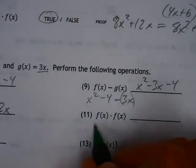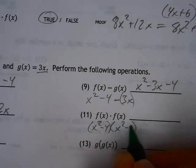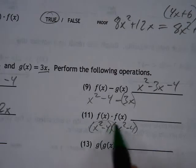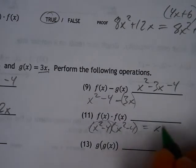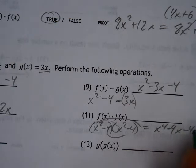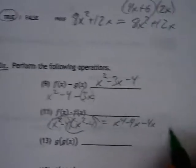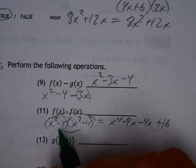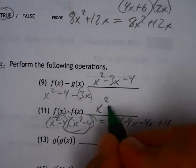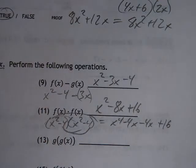f of x times f of x is x squared minus 4, and x squared minus 4. You're going to have to FOIL that. That's x to the fourth power. You go your outer and your inner — that's a minus 4x, it's another minus 4x, because your outer is your minus 4x, your inner is a minus 4x. But then you've got this plus 16, which is your last term, because it's a plus — you're minus times your minus. x to the fourth minus 8x squared plus 16 is your answer.